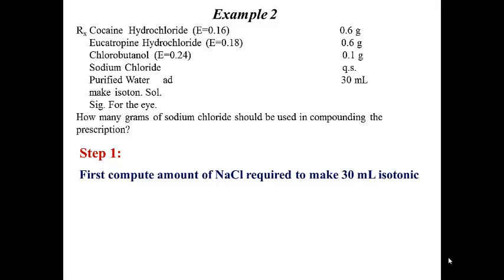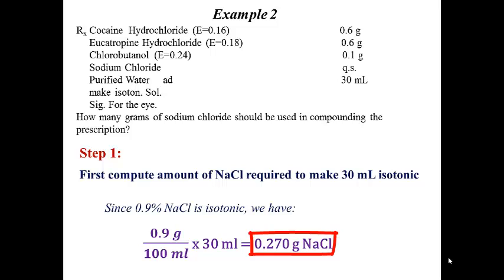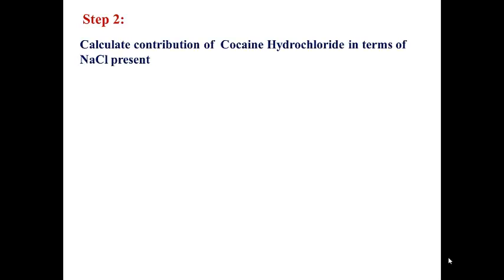Following the same steps, step 1: calculate the amount of sodium chloride required to make 30 milliliters isotonic. Using 0.9% NaCl as isotonic: 0.9 grams divided by 100 milliliters, multiplied by 30 milliliters, gives us 0.27 grams NaCl.